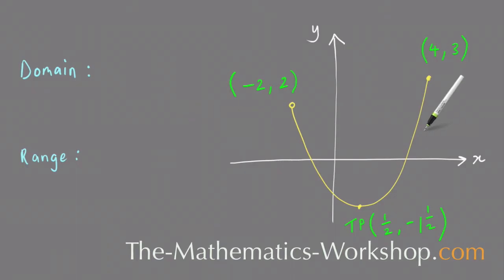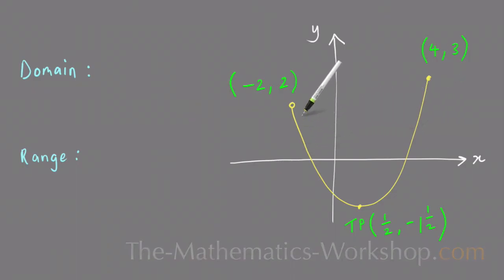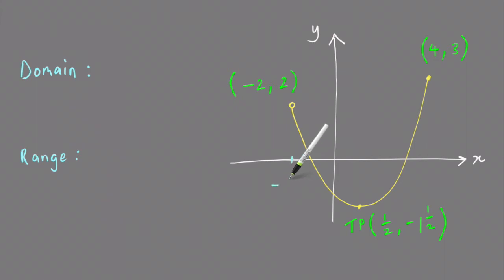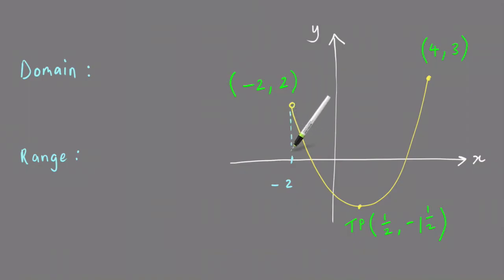The easiest way to find the domain is to look for the lowest x value on the graph, which is minus 2. If I mark that in on the x-axis here, this minus 2 corresponds to that point, or I could drop directly down to the x-axis to mark in the x value at that point.